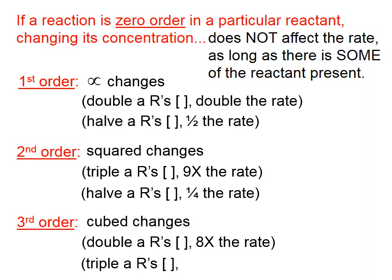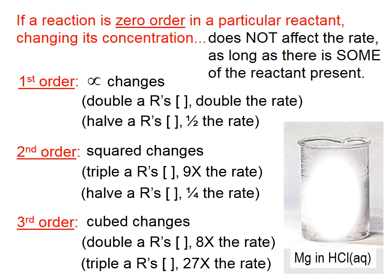If you triple a reactant's concentration, and the reaction is third order in that reactant, then the rate will go up by triple cubed, which is 27.